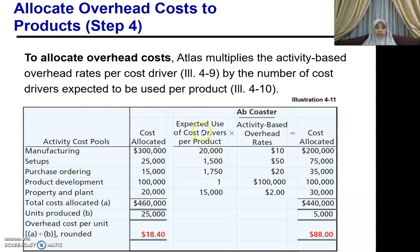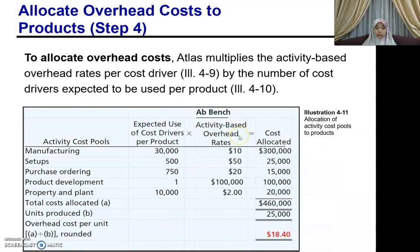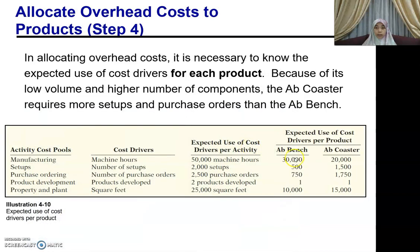That means you take the expected use of the cost driver for your AppCoaster. You have identified for your AppCoaster: 20,000 machine hours (for AppBench it was 30,000), 1,500 setups, 1,750 purchase orders, one product developed, and 15,000 square feet.